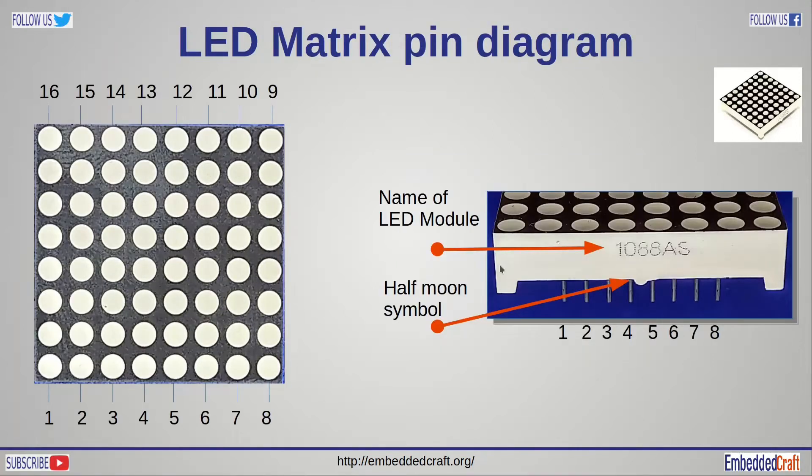Here are pin numbered from 1 to 8 and 9 to 16. One big point is how to identify pin number. We need to search name or half moon symbol. You will be able to find name of module or half moon symbol. Pin numbers will be from left to right. Left most pin is pin number 1, 2, 3 and so on.